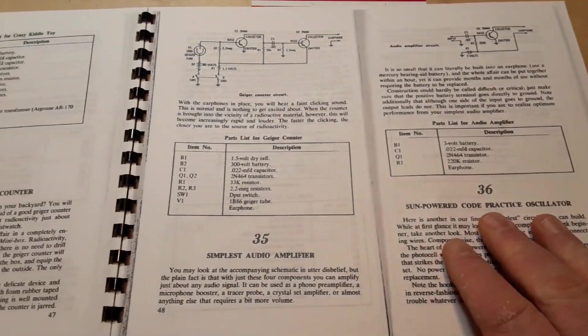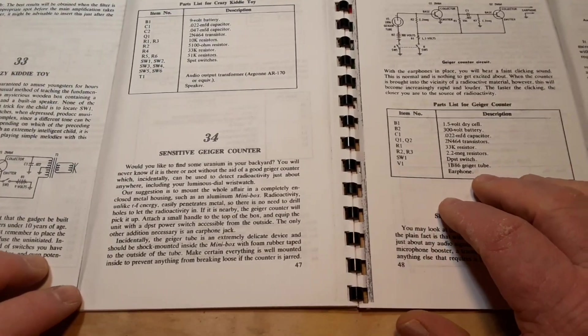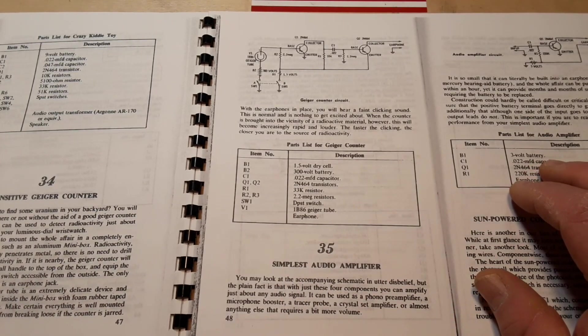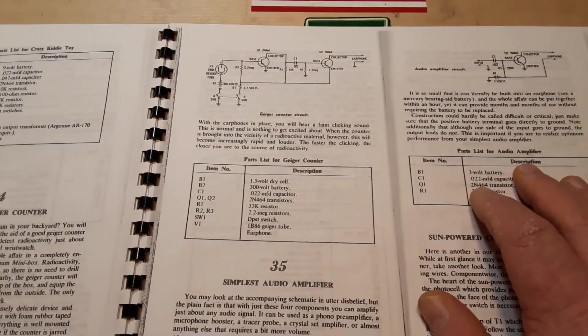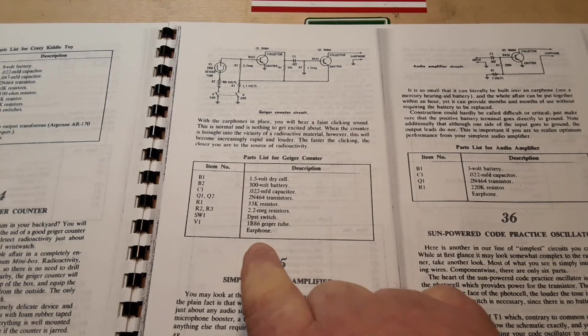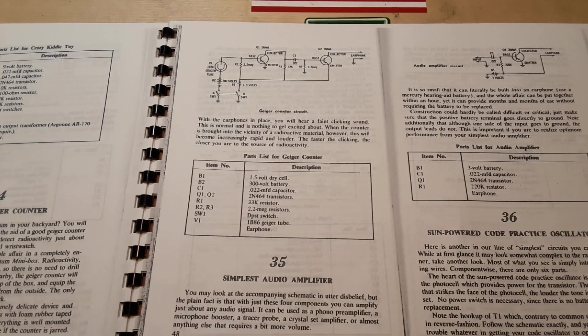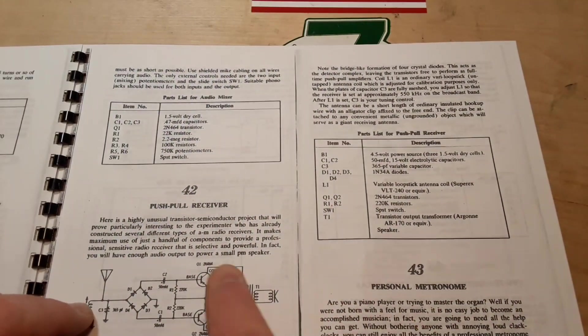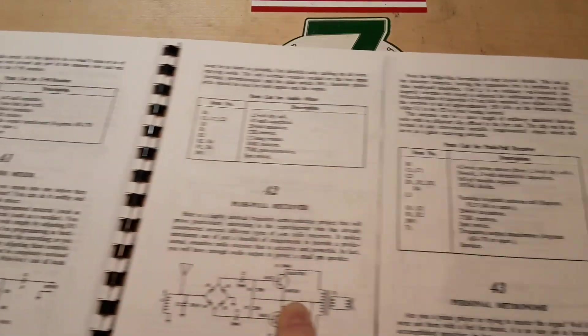Microphones, sun-powered code practice oscillators. Sensitive Geiger counter. I was wondering if they were trying to tell you how to build one without a Geiger-Mueller tube. But no, you have to have a Geiger-Mueller tube. Audio amplifier, metronome push-pull receiver, hi-fi audio mixer, CW monitor.